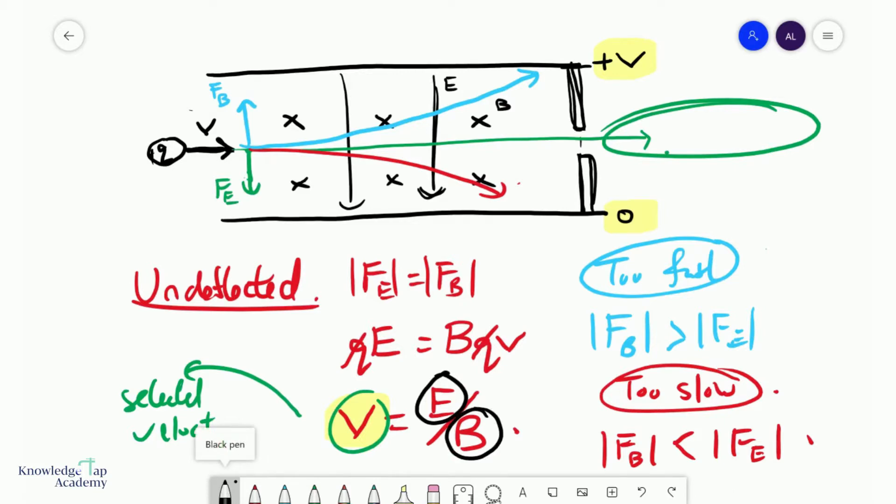And so in summary, by choosing the values of E and B, you can select or control the velocity that you want your particles to have, or at least those that come out undeflected.